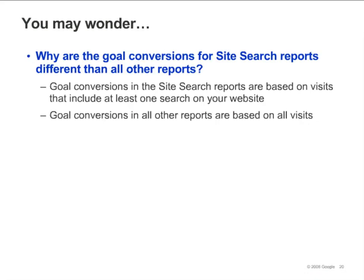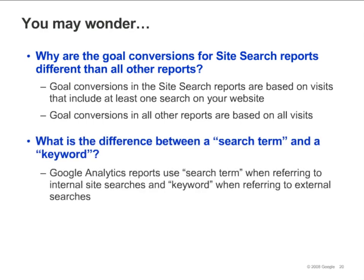Your Site Search reports will generally show a different number of conversions than what is shown in all of your other reports. This is because goal conversions in the Site Search reports are based on visits that include at least one search on your website, whereas the goal conversions shown in other reports are based on all visits. Because Site Search reports only include conversions from visits that included a search, you can see how effectively searches on your site drive conversions. If you are confused about the difference between Search Term and Keyword, it's helpful to remember that Google Analytics reports use Search Term when referring to internal site searches and Keyword when referring to external searches.